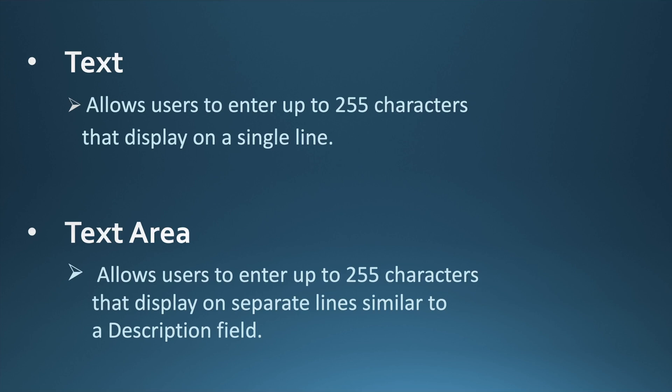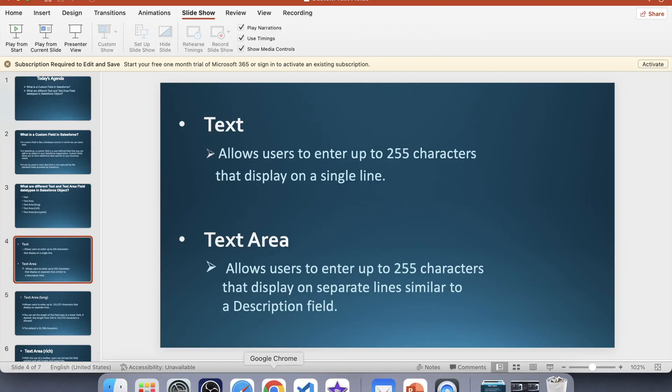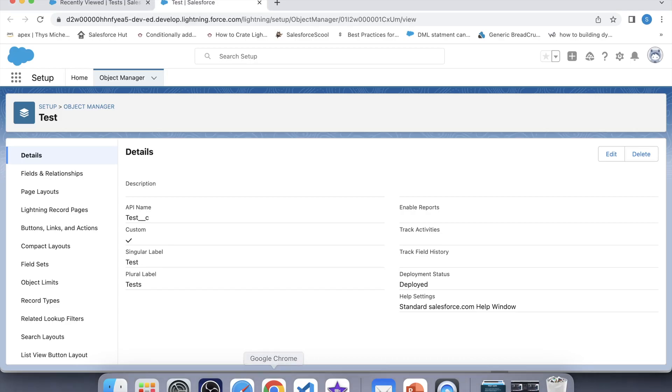The basic difference is that a Text field will allow you to store and display data in a single line of text, while a Text Area field will allow you to store and display data in multiple lines of text — just like a description field. Let's create and test both fields in our org.